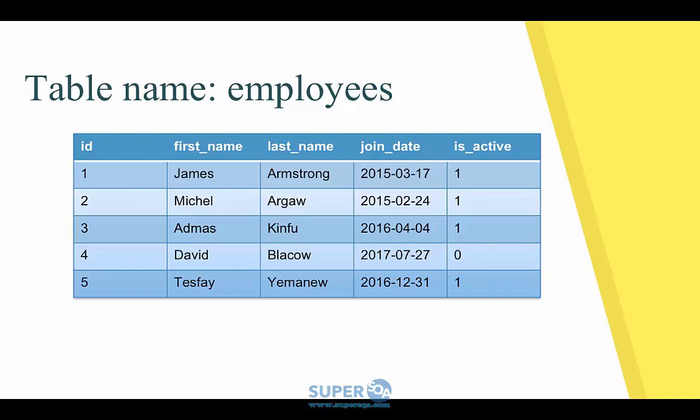To simply look at it, the table has five fields — also called columns. You have an ID field, a first name, last name, joined date — which is the date the employee joined — and 'is active', indicating if the employee is still active or not.